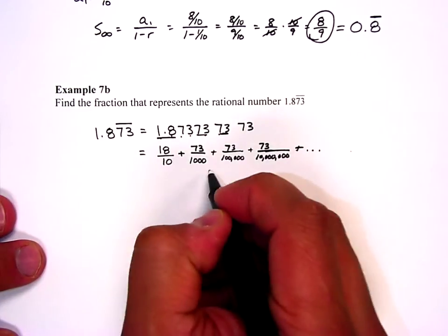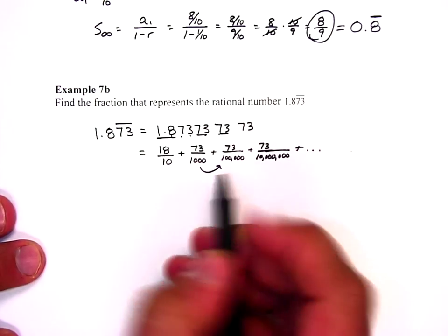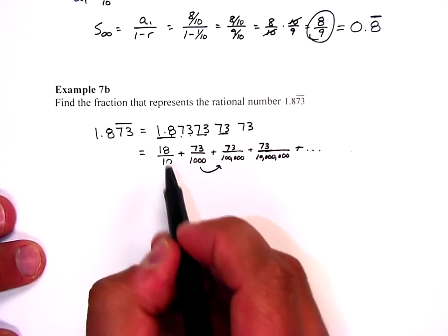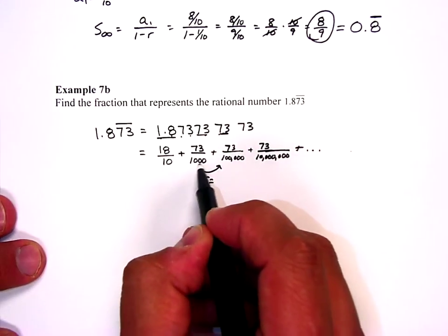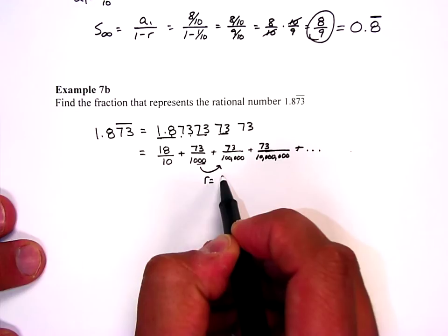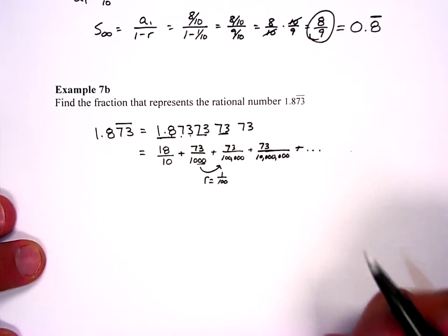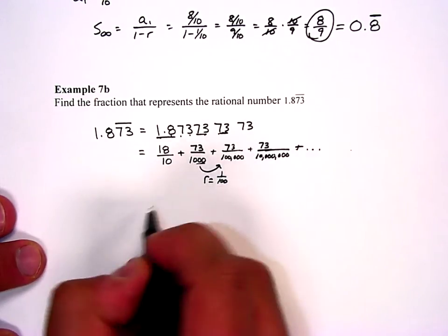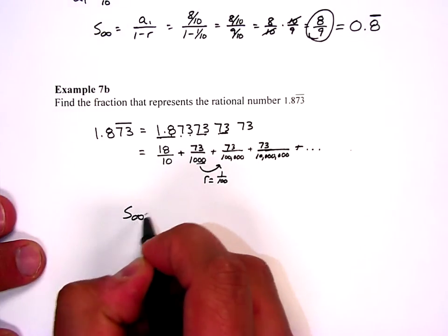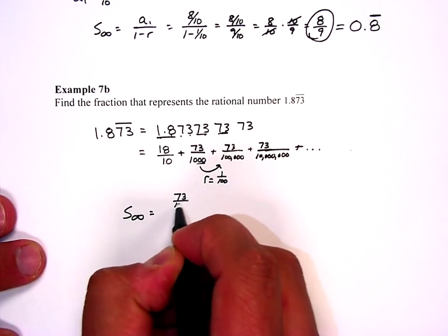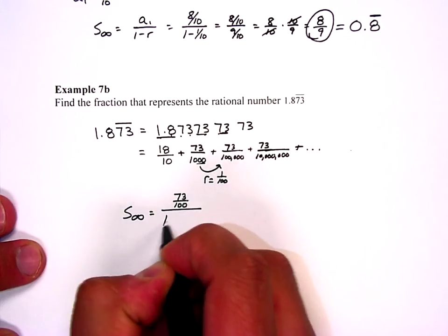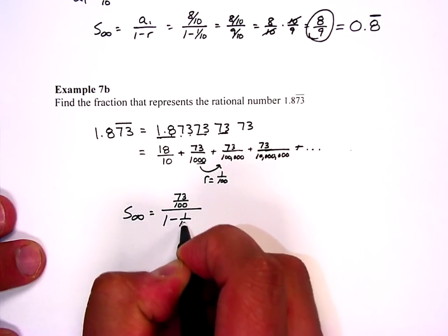Well what am I multiplying by here? I'm just going to figure this part out and then I'll add it to this. This is r equals, how do I go? I got 3, now 5. So I'm multiplying by 100. My first term is 73 over a thousand. So the infinite series is 73 over 1000, 1 minus 1 one-hundredth.